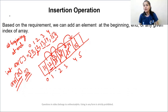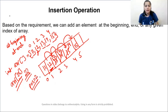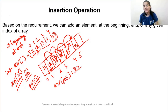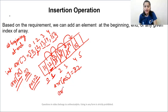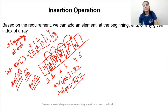After shifting, the index where we want to insert is empty. The user gave position 2, but in terms of indexing it is index 1. So you write ARR[position - 1] = 22. That is how 22 gets inserted at position 2.